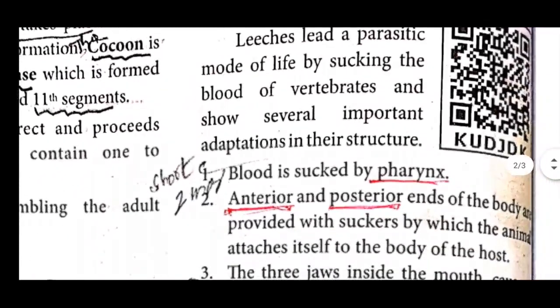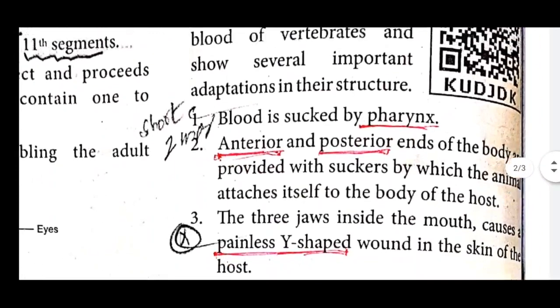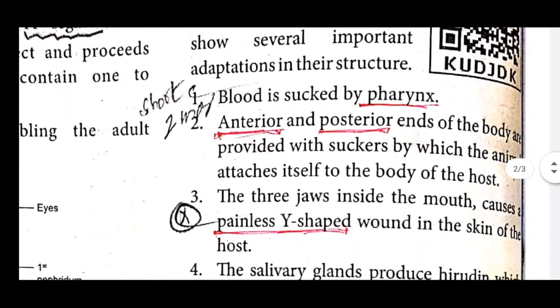First, blood is sucked by the pharynx. Second, the anterior and posterior ends of the body are provided with suckers by which the animal attaches itself to the body of the host.